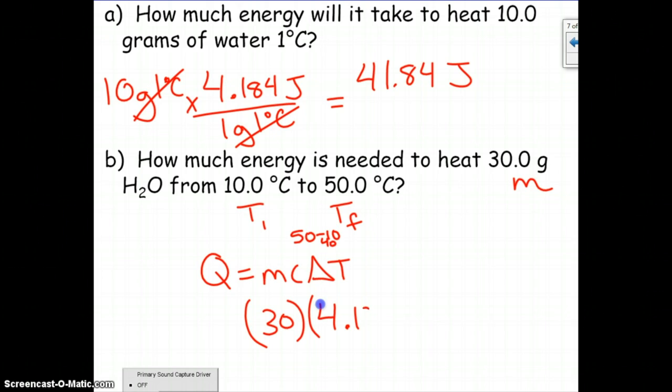C is still water, so we're still going to use 4.184. Then we just found delta T to be 40. If you multiply all those across, you will get the energy required to heat 30 grams of water by 40 degrees.